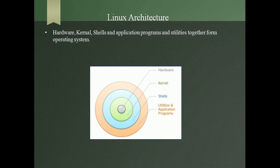Now let's look at the Linux architecture. This is a blueprint of the Linux operating system — we can see what is inside the operating system through this picture. Hardware, kernel, shells, and application programs and utilities together form an operating system. Hardware never operates alone — if you have a computer without an operating system, you cannot use it. You need something to operate it, and that is the operating system.